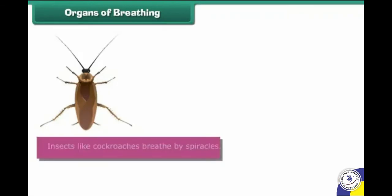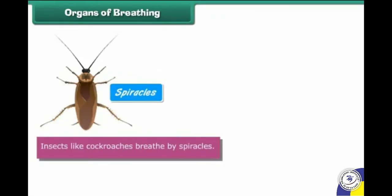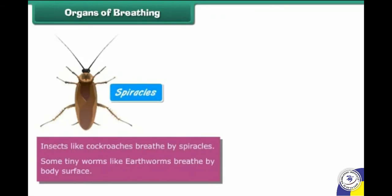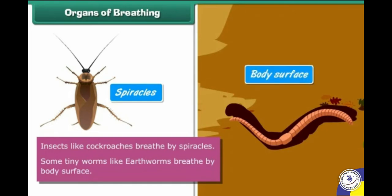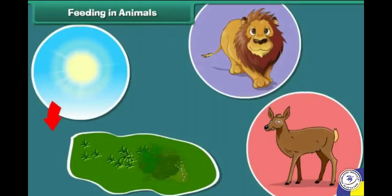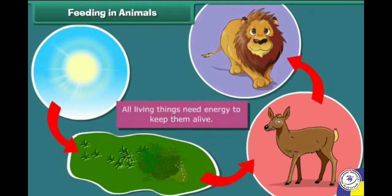Insects like cockroaches breathe by spiracles. Some tiny worms like earthworms breathe by body surface. Feeding in animals: as we all know, all living things need energy to keep them alive, and they get this energy from food.